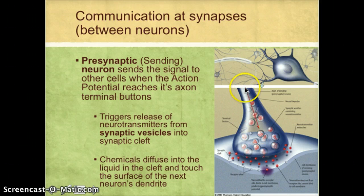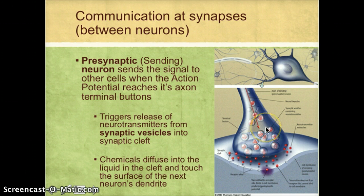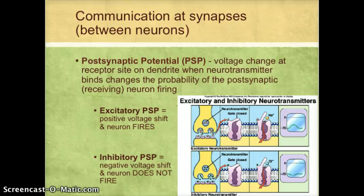So the neuron sending the signal — the presynaptic neuron — releases those neurotransmitters, which then touch the surface of the receiving dendrite, the postsynaptic dendrite, bind onto those receptor sites, and the whole process starts over again. We call this voltage change the postsynaptic potential. It can be two different types. One is an excitatory postsynaptic potential, where you have a positive voltage shift inside the cell and the neuron fires the electrical impulse, sending the signal.